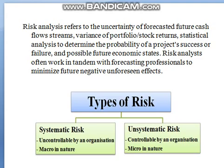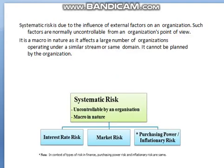Systemic risk is due to the influence of external factors on an organization. Such factors are normally uncontrollable from an organization's point of view. It is macro in nature as it affects a large number of organizations operating under a similar scheme or same domain. It may include interest rate risk, market risk, and purchasing power risk.